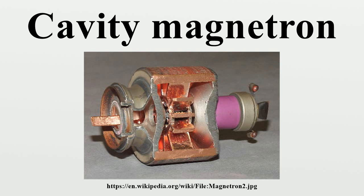The magnetic field causes the electrons, attracted to the positive outer part of the chamber, to spiral outward in a circular path — a consequence of the Lorentz force. Spaced around the rim of the chamber are cylindrical cavities, with slots cut along their length opening into the central common cavity space. As electrons sweep past these slots, they induce a high-frequency radio field in each resonant cavity, which in turn causes the electrons to bunch into groups. A portion of the RF energy is extracted by a short antenna connected to a waveguide, which directs the extracted energy to the load — either a cooking chamber in a microwave oven or a high-gain antenna in the case of radar. The sizes of the cavities determine the resonant frequency and thereby the frequency of the emitted microwaves.